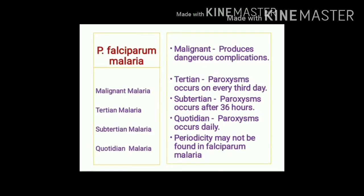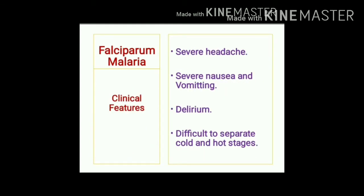Falciparum malaria is malignant malaria — malignant because it produces dangerous complications. It may present as tertian, subtertian, or quotidian malaria, or sometimes with no fixed periodicity. Subtertian means paroxysms occur after 36 hours; quotidian means paroxysms occur daily. Clinical features include severe headache, severe nausea and vomiting, delirious condition, and the cold and hot stages are not seen distinctly.